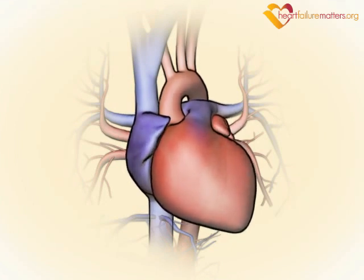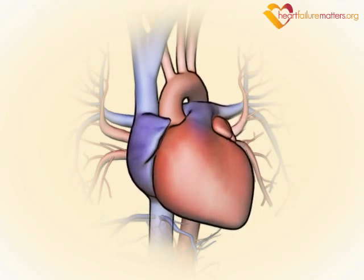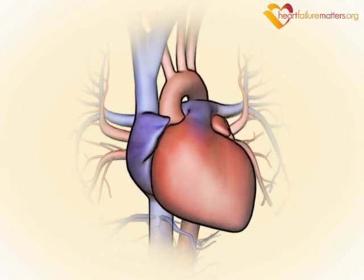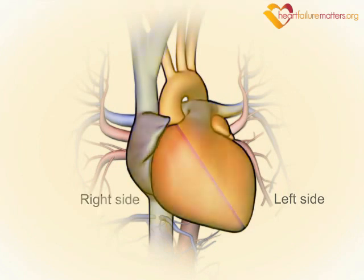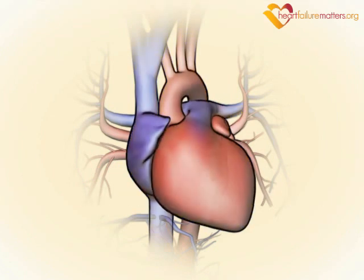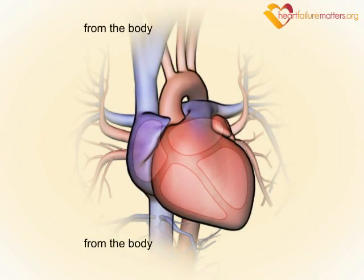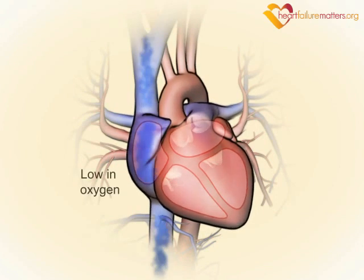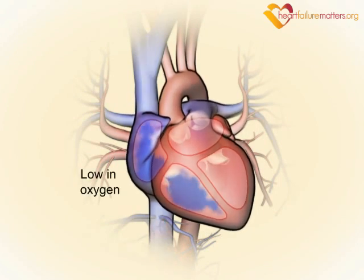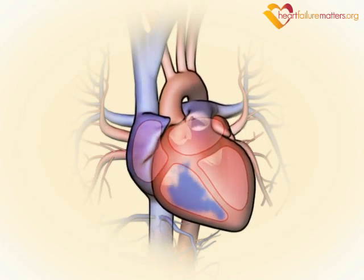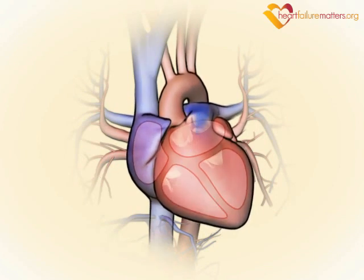Your heart is divided into two sides, the left and the right. Blood from your body enters the right side of your heart. This blood is low in oxygen. Your heart pumps this blood to the lungs.